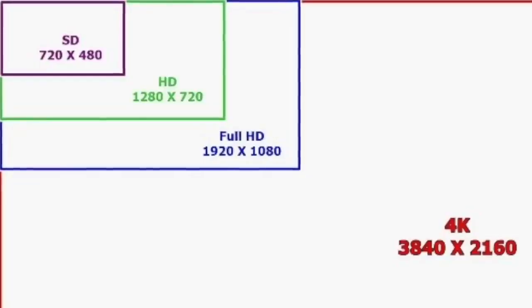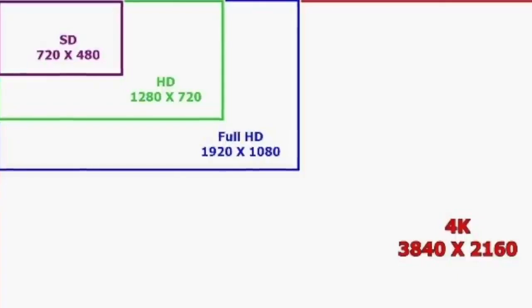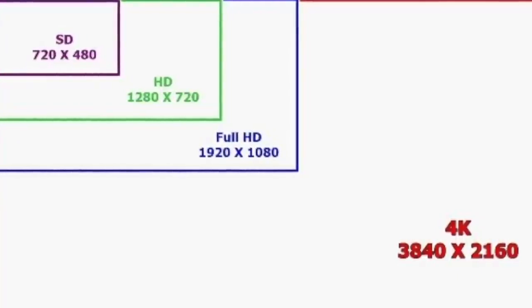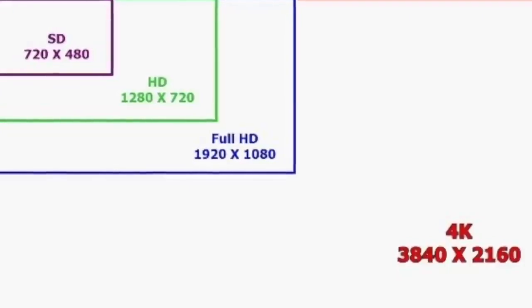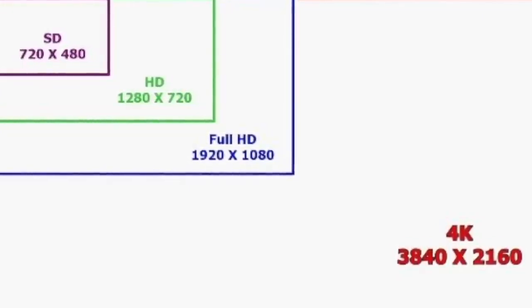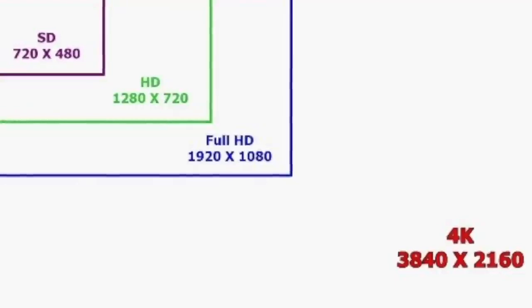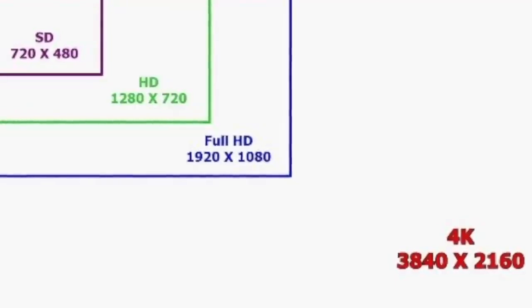First of all, before we start, I want to explain what resolution is, so that we can start knowing what we are talking about. Screen resolution is the total number of pixels that can be displayed on any screen, be it a computer monitor, a television, a cell phone, whatever. To refer to resolutions, we normally use two numbers, for example 1920 by 1080, which indicate the amount of pixels displayed on the screen. The first number tells you the number of horizontal pixels and the second number tells you the number of vertical pixels.